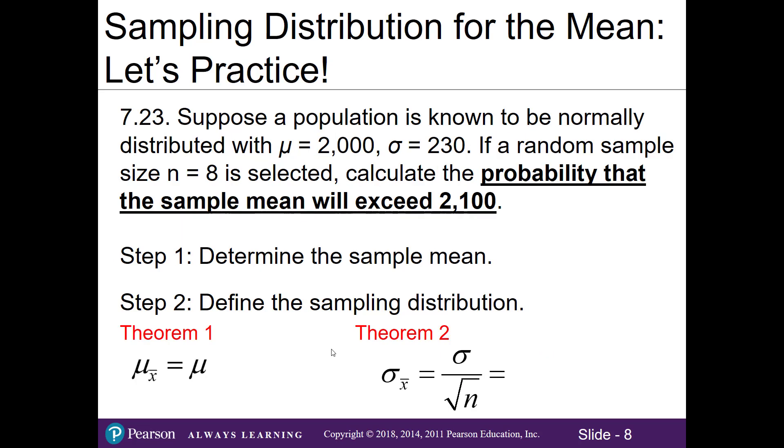Let's look at problem 23 on our worksheet. Suppose a population is known to be normally distributed with a population mean of 2000 and a population standard deviation of 230. If a random sample size of n = 8 is selected, we're going to calculate the probability that the sample mean will exceed 2100.